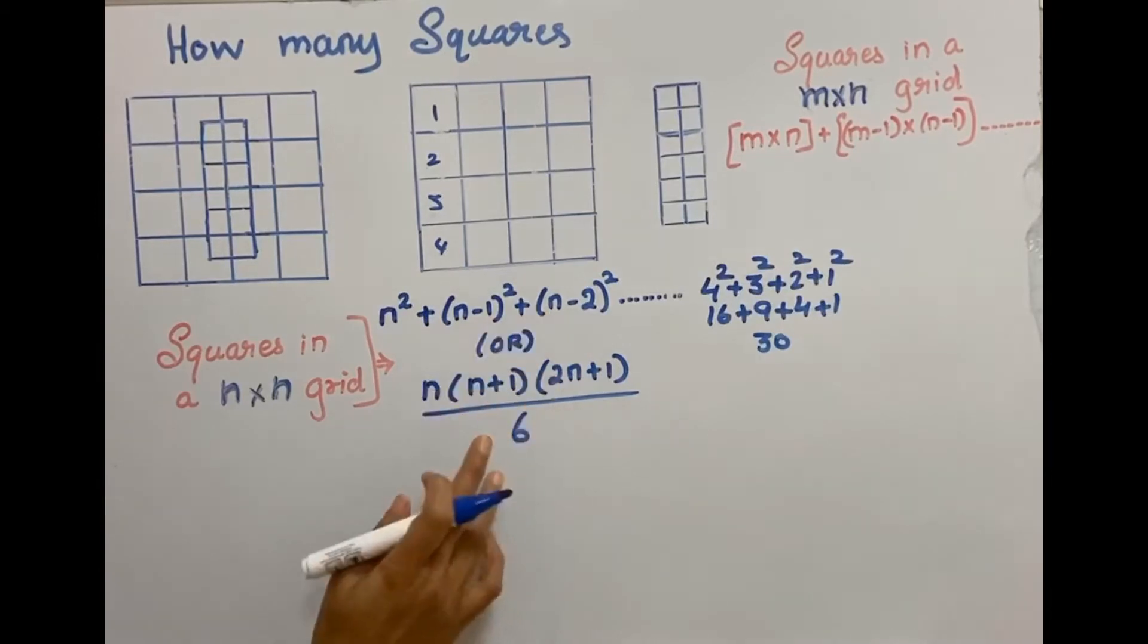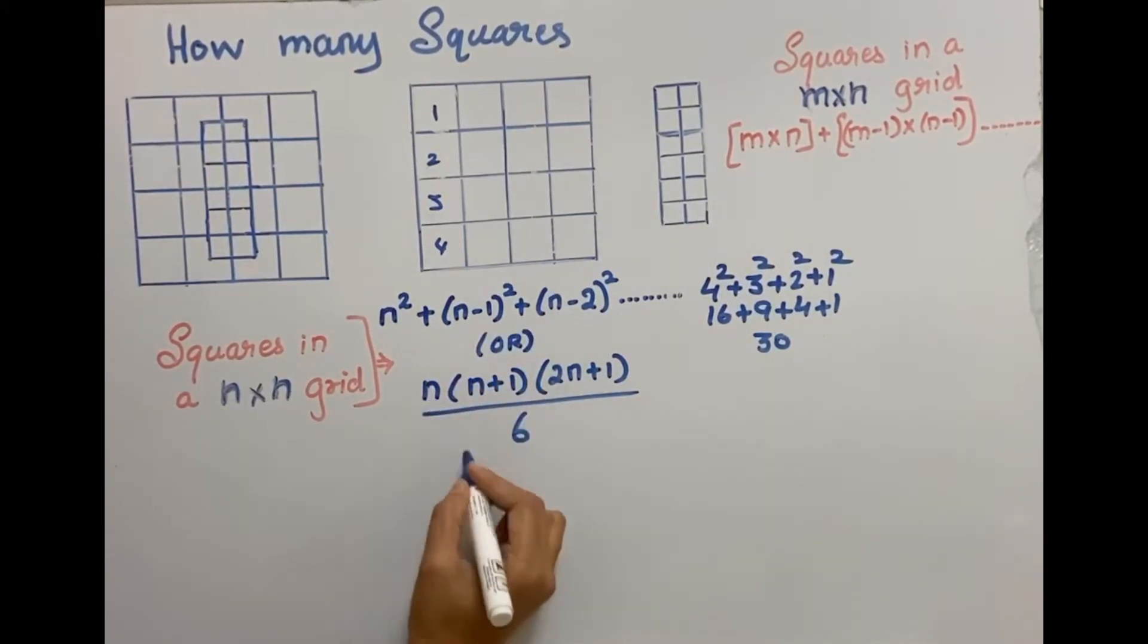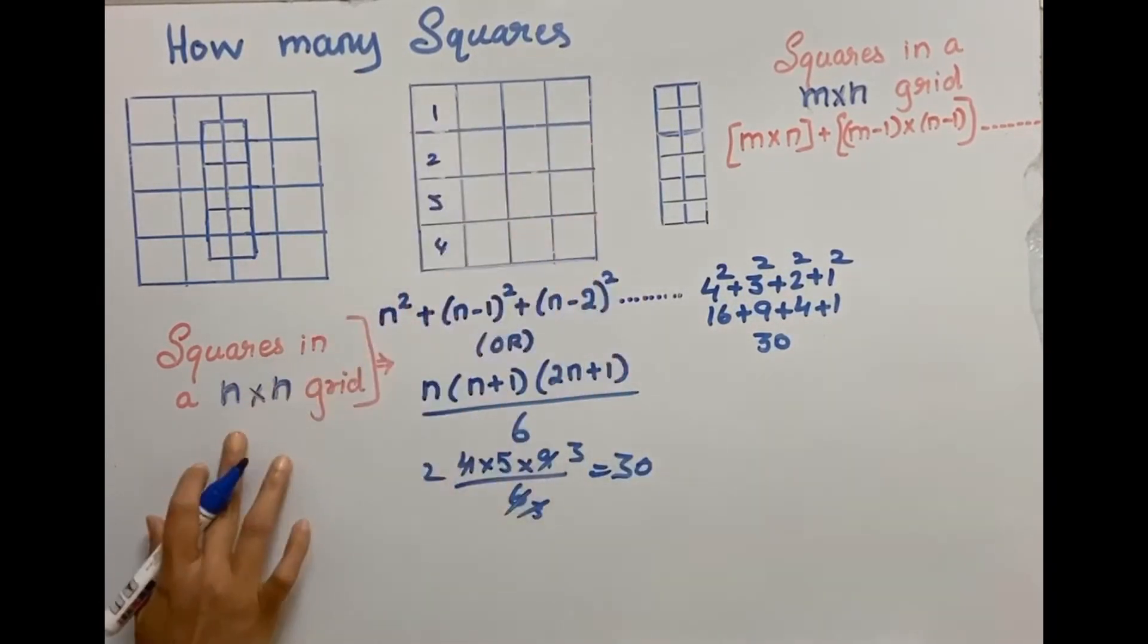So by this formula or by this formula, we can find out. This is the n into n plus 1. So n is 4, n plus 1 is 5, 2n plus 1 which will be 9. So cross out, so 30. We'll get the same answer. So to find the number of squares in an n into n grid, either use this formula or this formula.